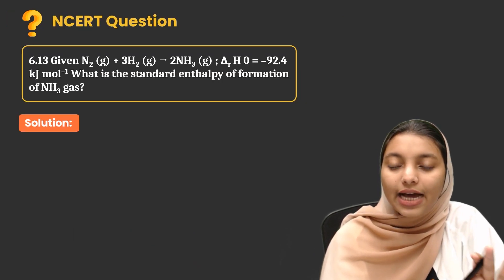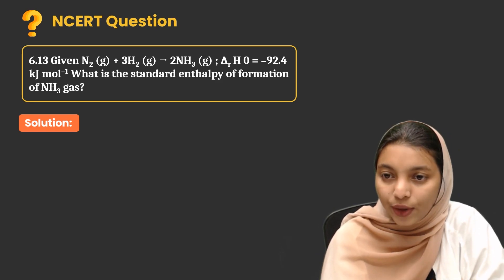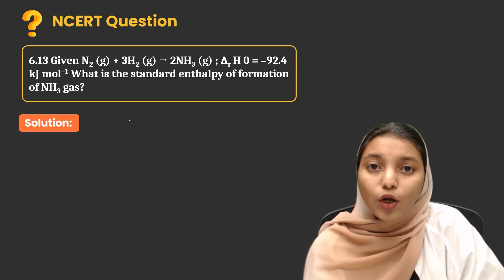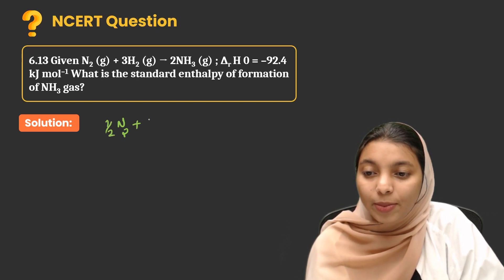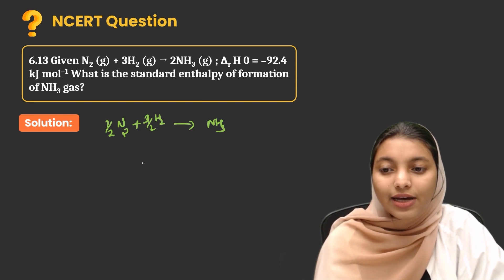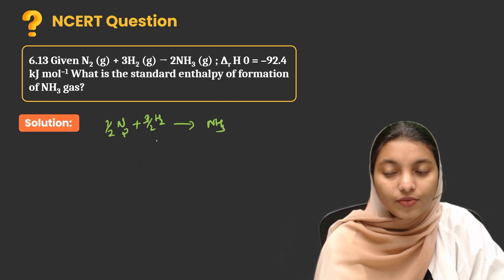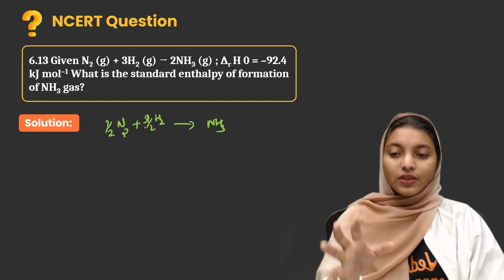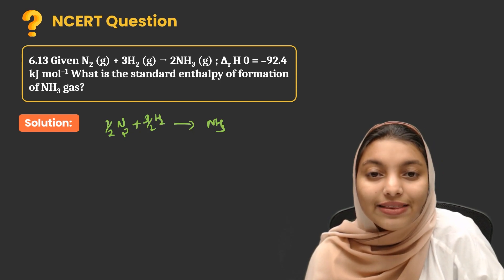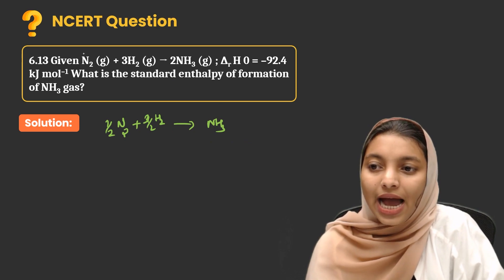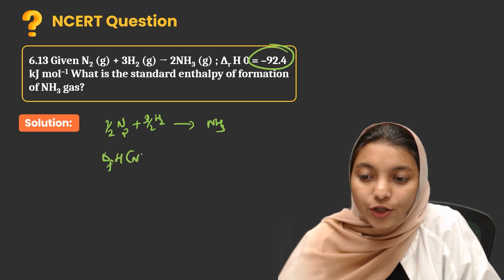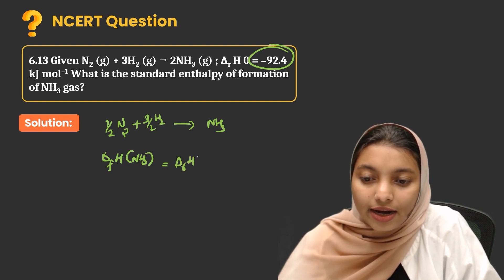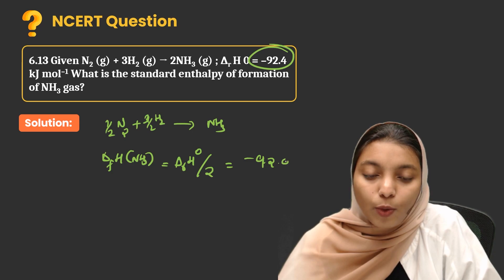N2 + 3H2 → 2NH3, with standard reaction enthalpy given as minus 92.4 kilojoule per mole. What is the standard enthalpy of formation of NH3? For standard enthalpy of formation, we need the equation ½N2 + 3/2H2 → NH3, which is the given equation divided by 2. So standard enthalpy of formation of NH3 = minus 92.4 divided by 2 = minus 46.2 kilojoule per mole.